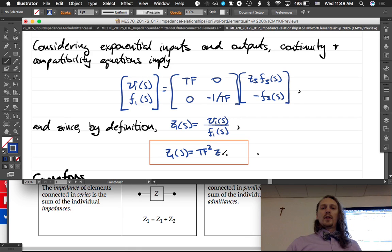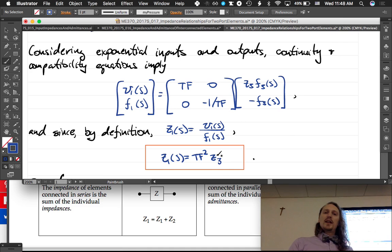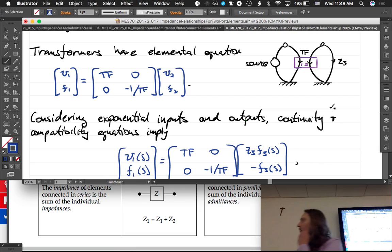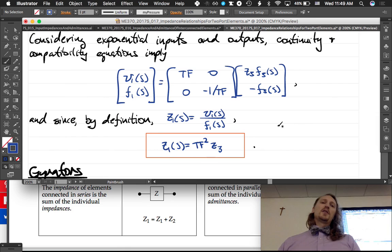Then we are going to get this expression: z1 of s equals tf squared times z3. That is a really horrible 3. So what we're saying, let's take this result and look back at this figure. We're saying that the impedance that's felt at this element here, across this element connected to the source, is z3, the same as on this side of the transformer, times the transformer ratio squared. I tried to give you a little bit of a motivating derivation, but I kind of went through it quickly because it's just working through the algebra.